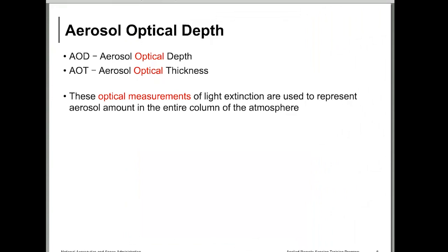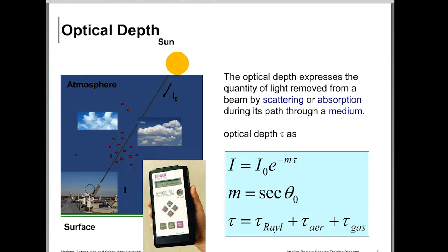The quantity which we get from the satellite is not PM2.5. We get something called aerosol optical depth, also called aerosol optical thickness. For the satellite community, both these terms — AOD or AOT — are the same. These are optical measurements of light extinction used to represent aerosol amount in the entire column of the atmosphere. This is not a direct mass measurement of PM2.5, but an optical measurement of aerosol loading from the surface to the satellite height.